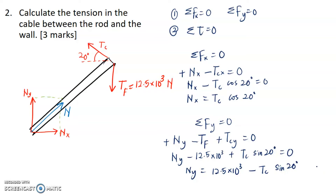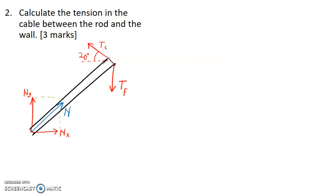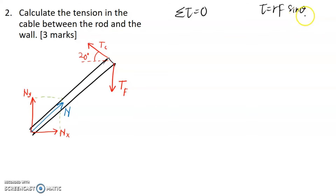Again, we cannot proceed further because we have two unknowns, NY and TC. Now we will be using the second rule, which is total torque equals 0. For reference, torque equals R times F times sine theta, where R is the moment arm, F is the force, and sine theta is the angle between the moment arm and the force. Based on the original diagram, the angle is 60 degrees, meaning the angle between the rod and TF will be 30 degrees, as we can assume it creates a right angle triangle.